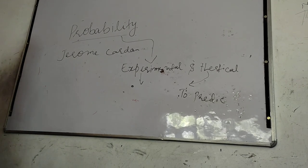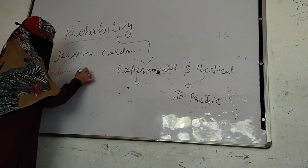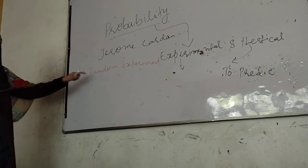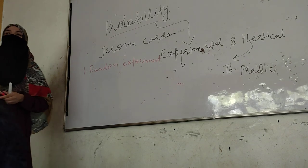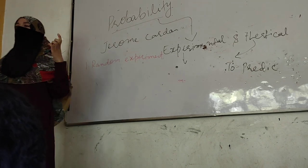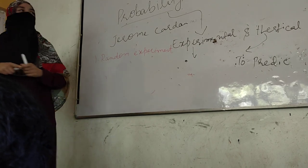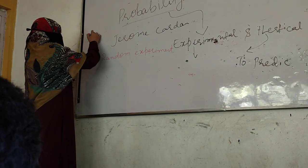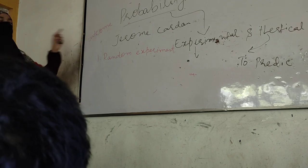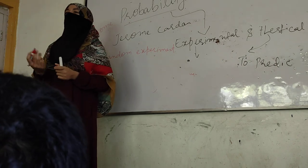First we will look at random experiments. A random experiment is an experiment done under artificial conditions where the outcome produced will be different each time. An outcome is a possible result when an experiment is done.